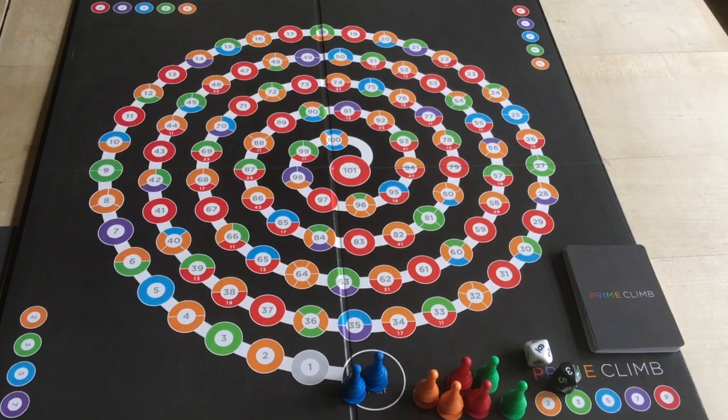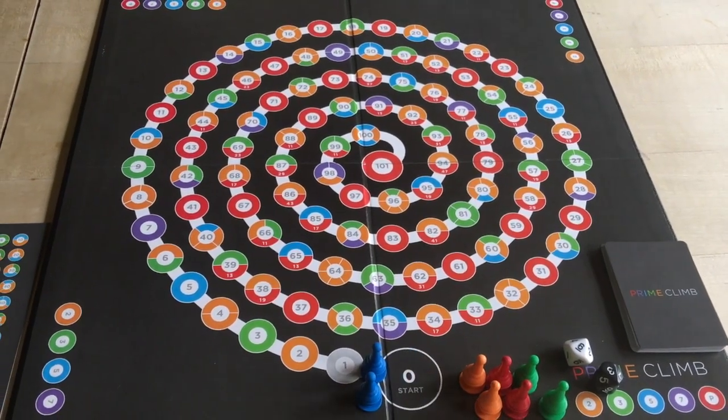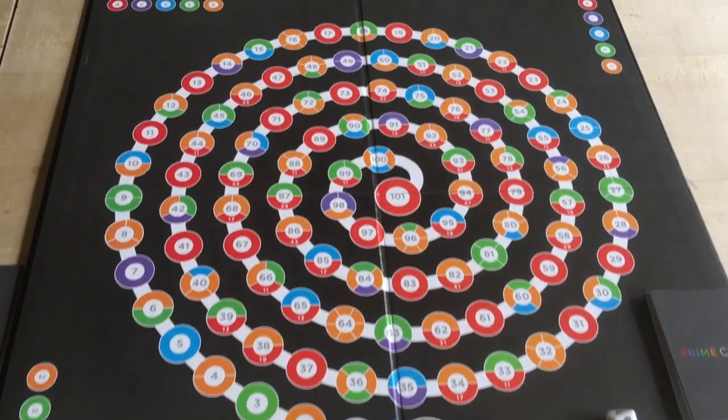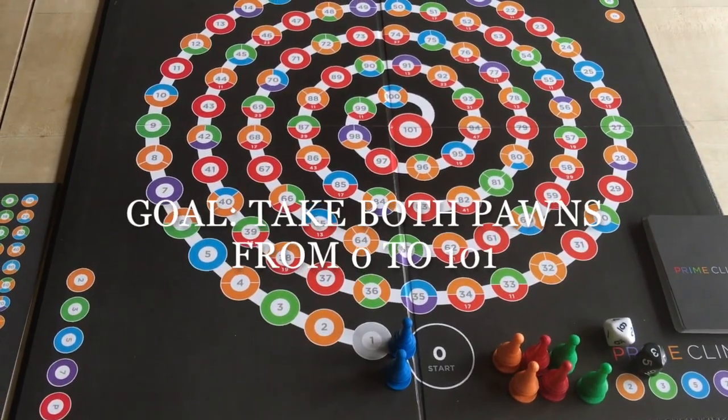The goal of the game is to take your two pawns, they start at 0, and you're going to try to get them both to 101. When you get both pawns to 101, you win.